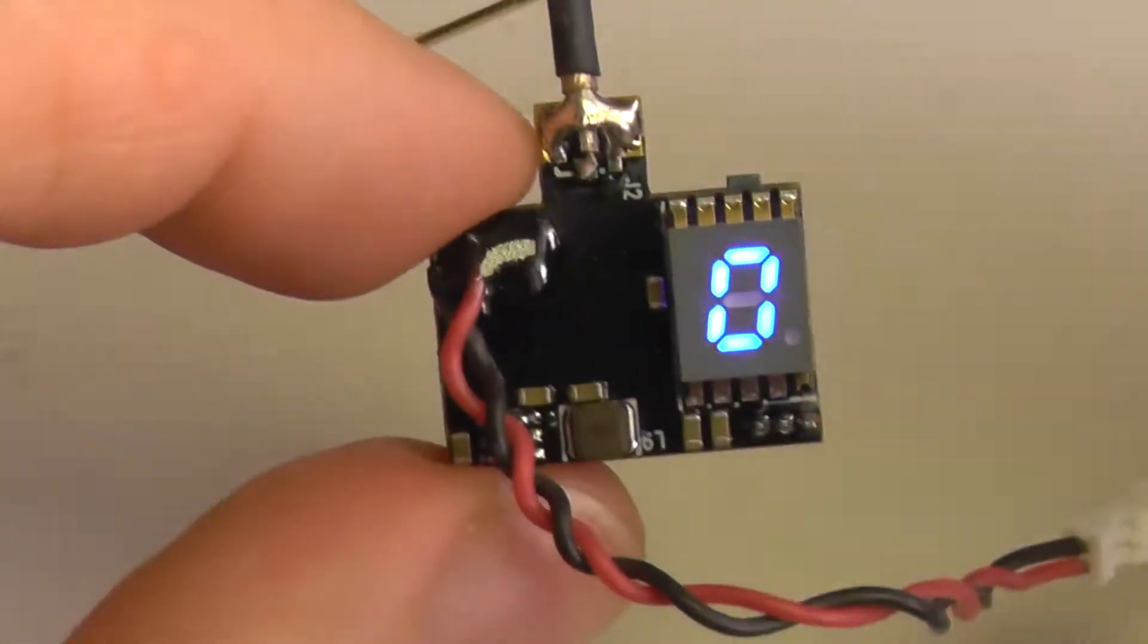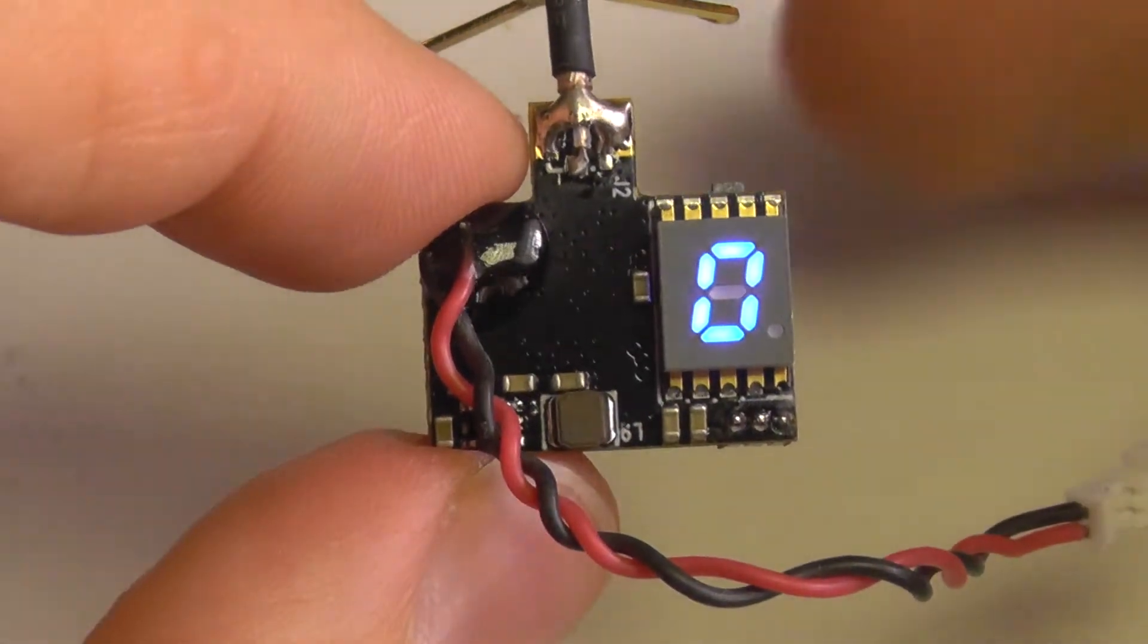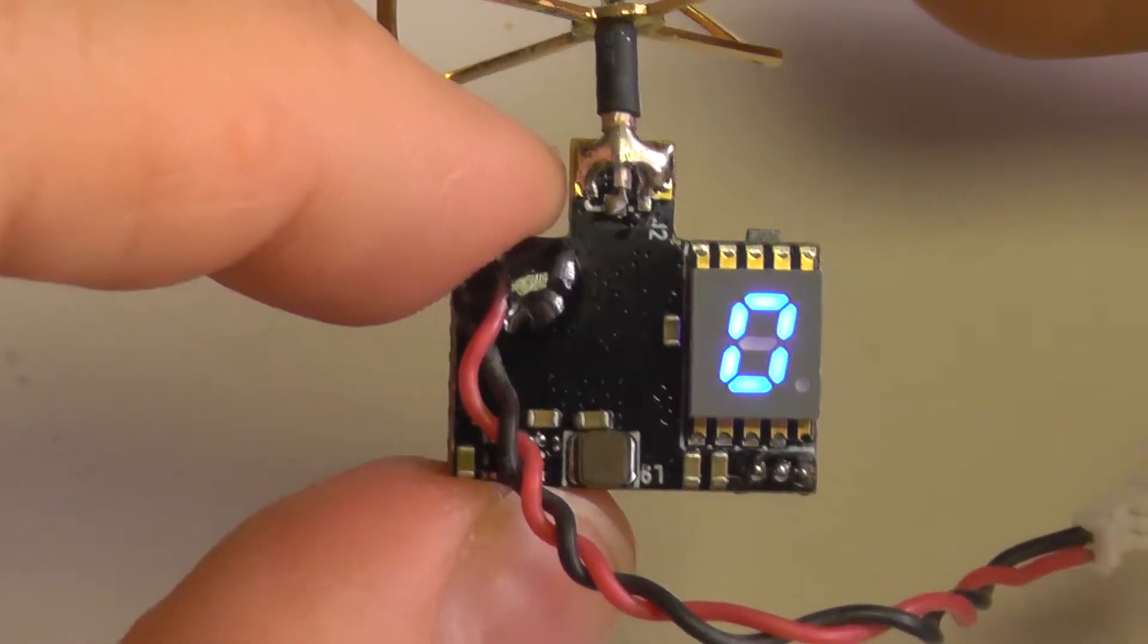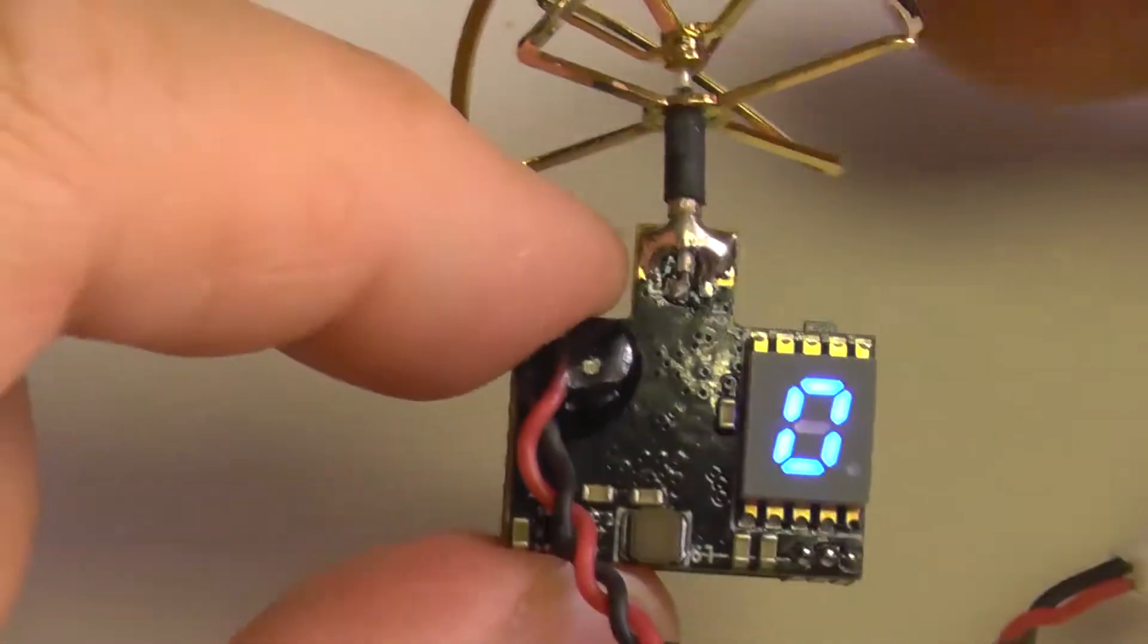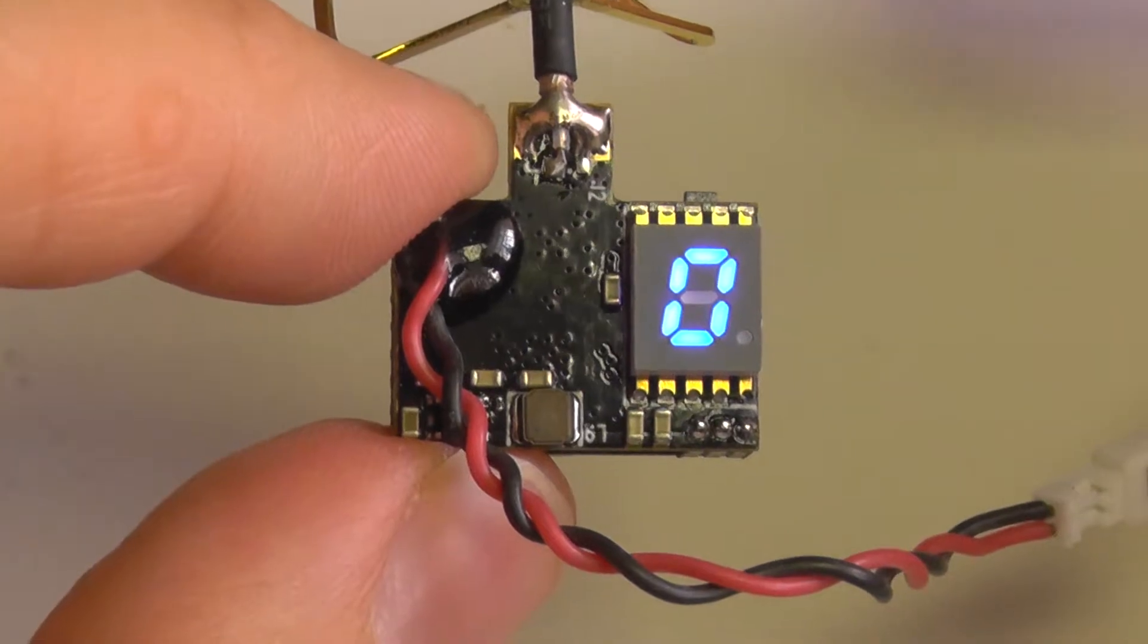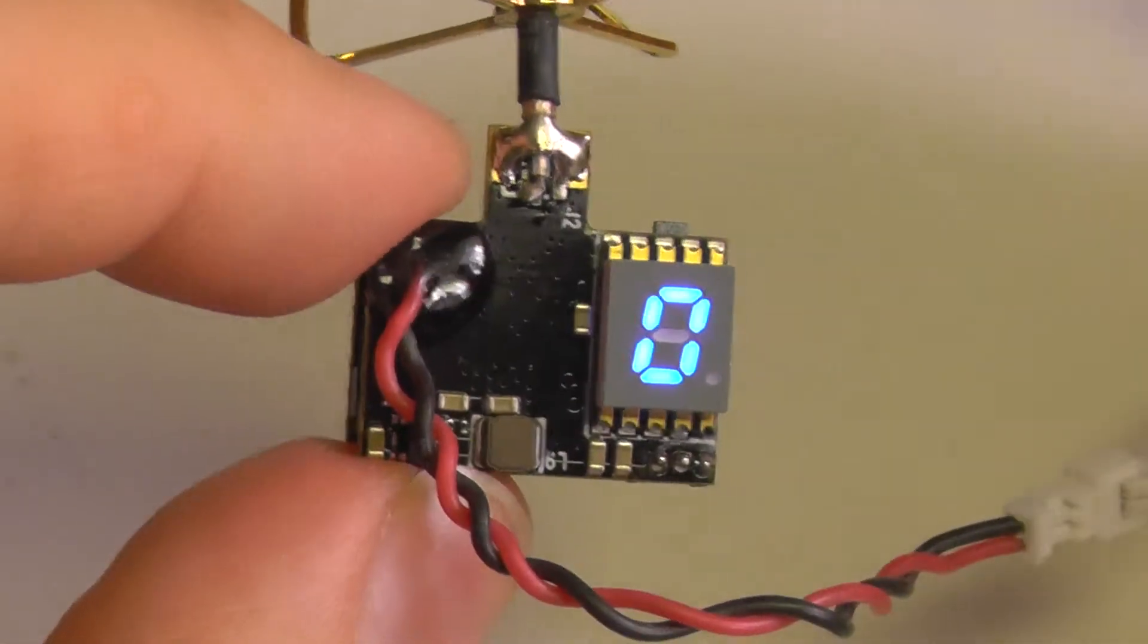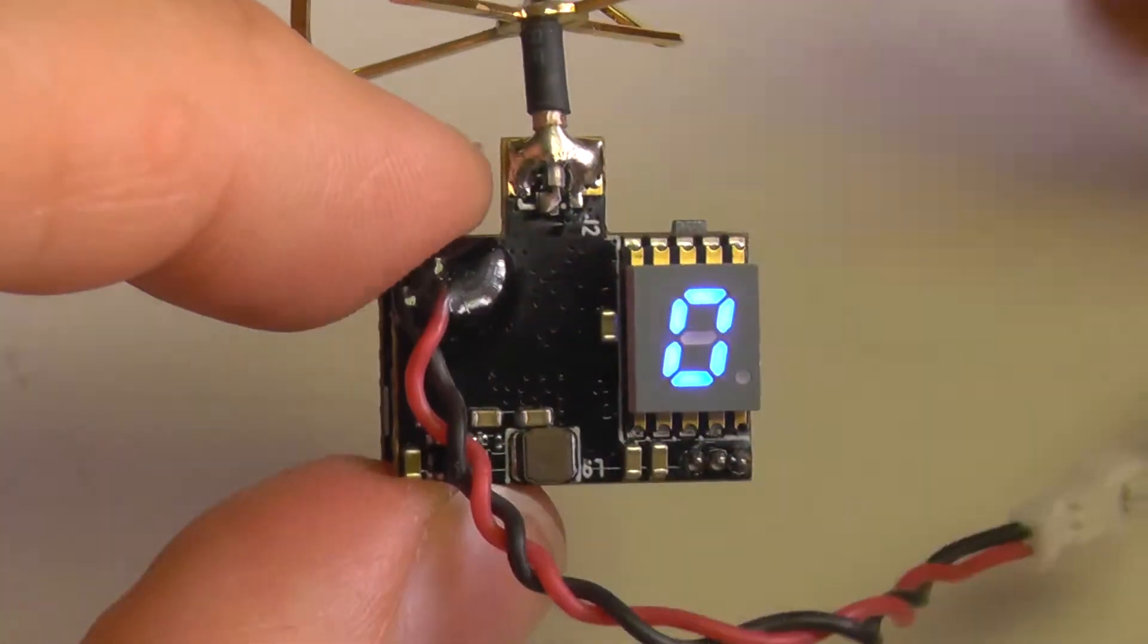This is useful when you have this camera installed on a quadcopter or plane or something like that and it's powered from the flight battery. Maybe you want to do some calibrations or tests or configure the flight controller - you don't want the FPV camera to run, to overheat and to consume extra power, so you can just turn it off.